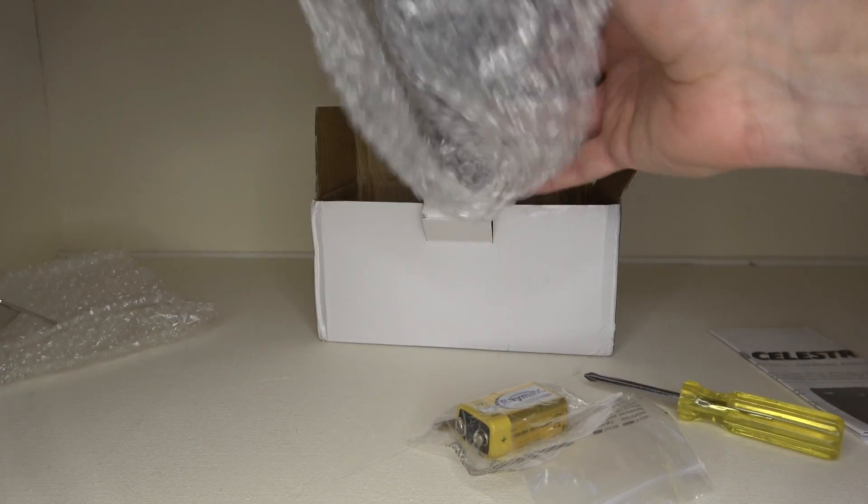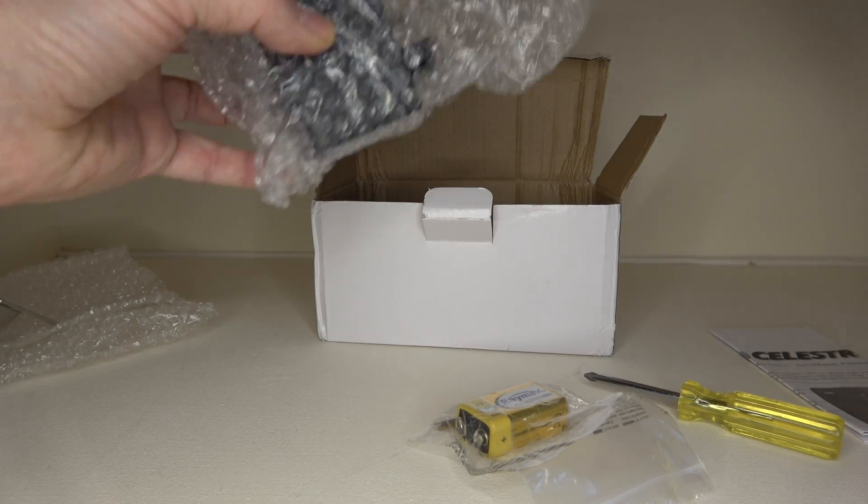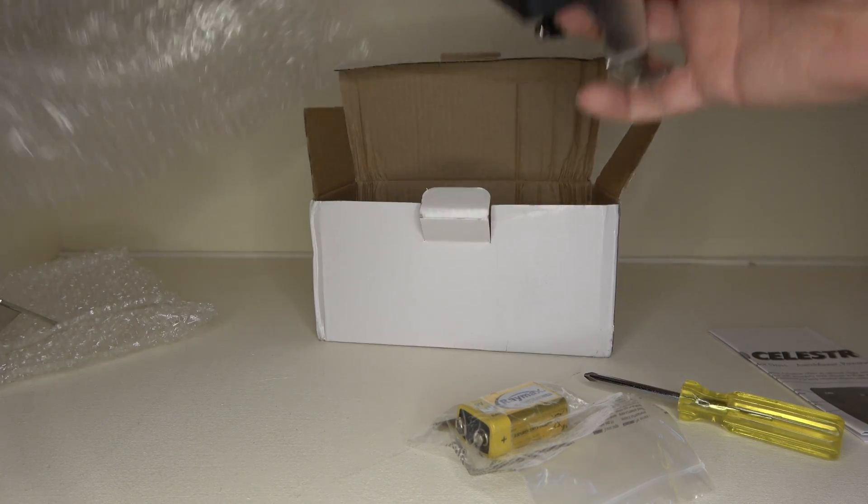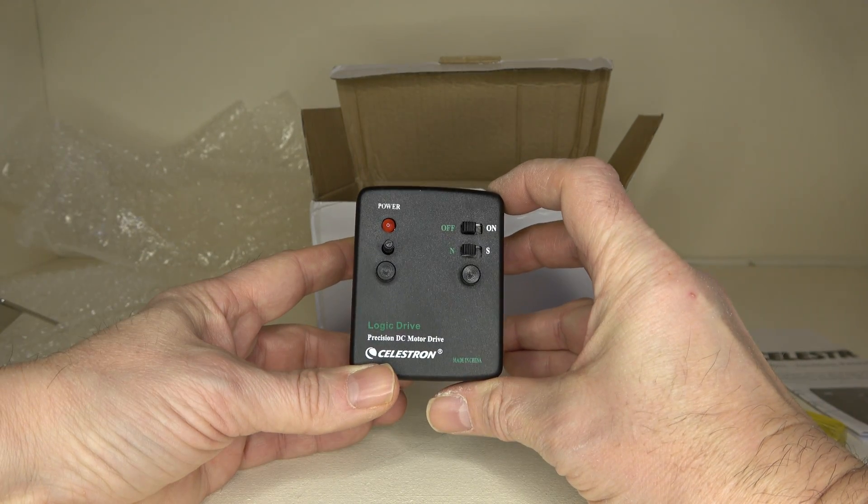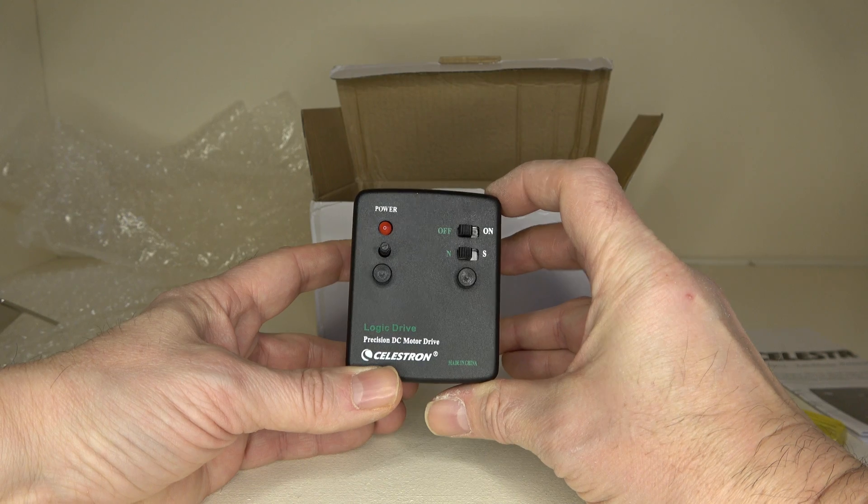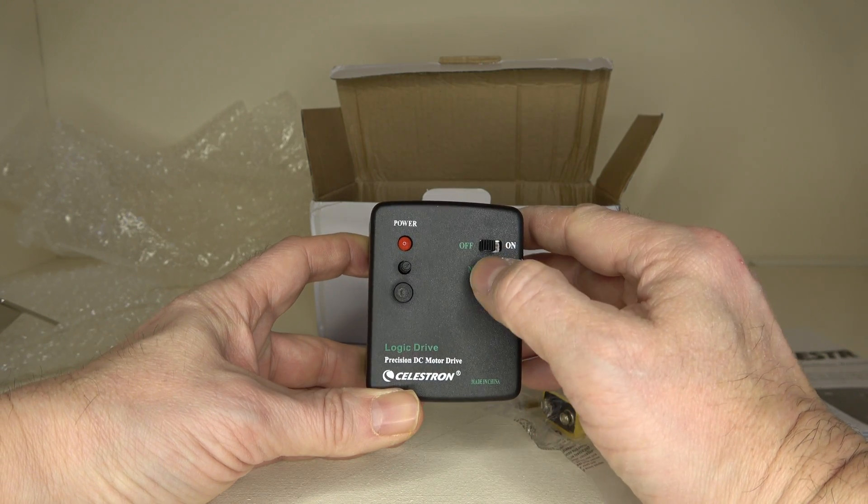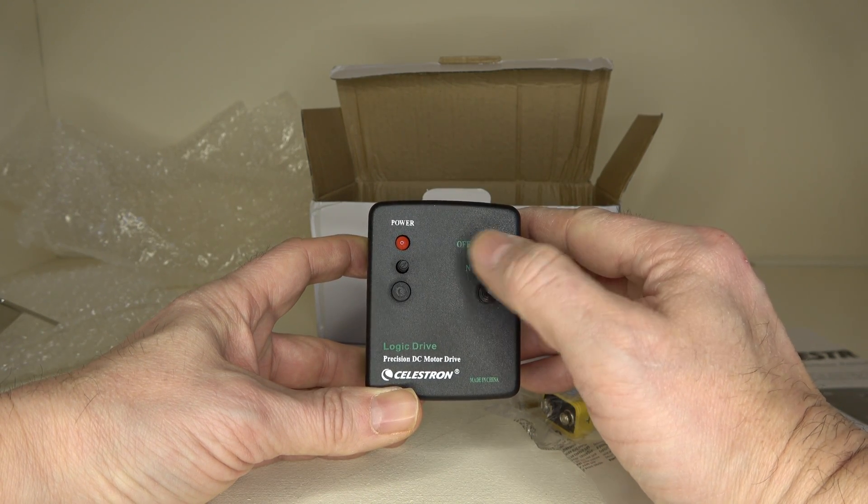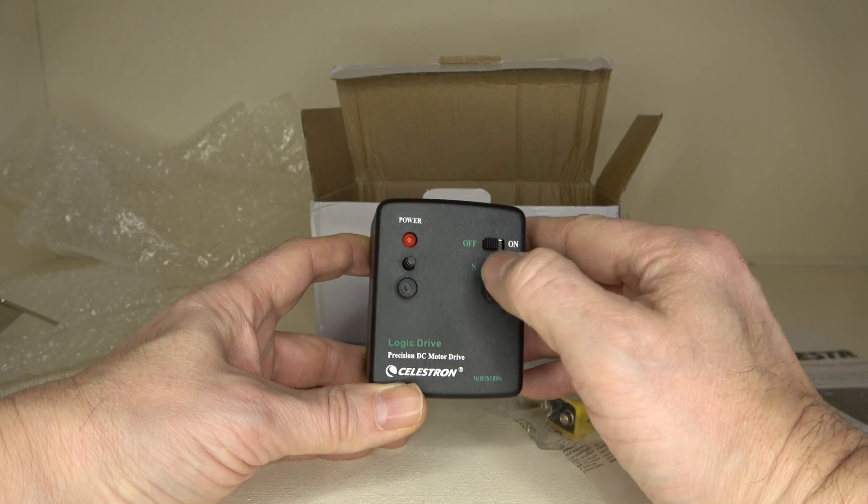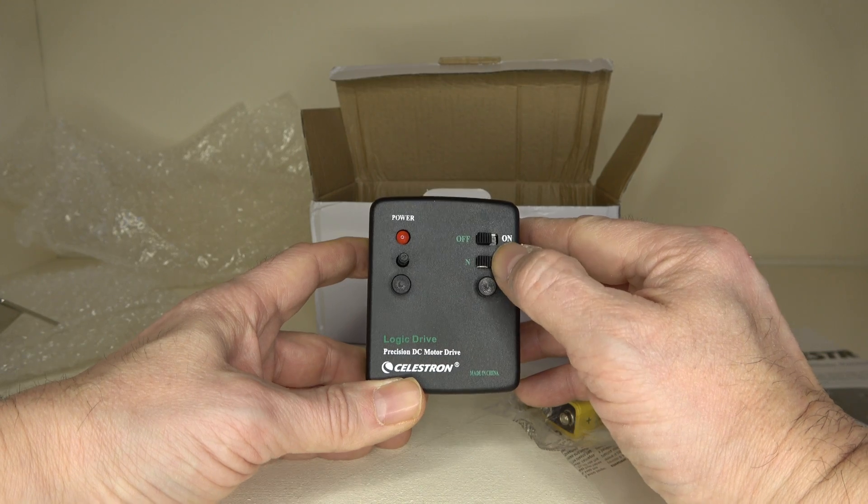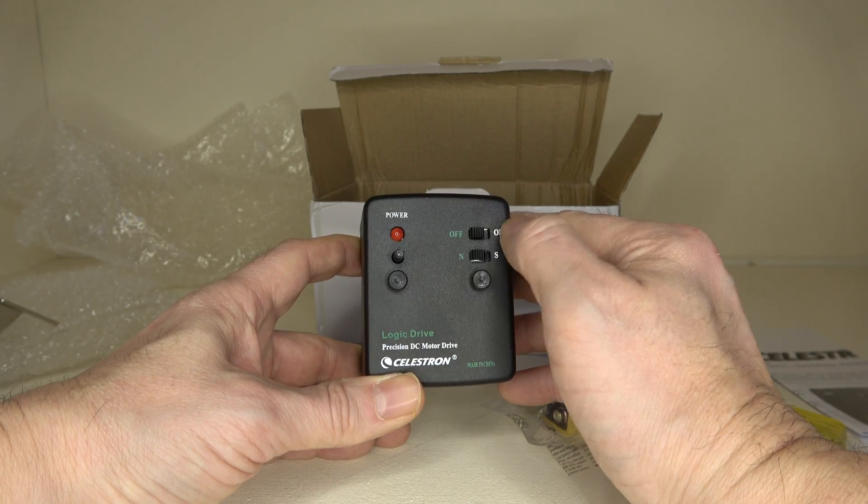And here is the machine, the logic drive precision DC motor drive. You've got north and south there, depending on where you are, whether you're on the north or south hemisphere. So if you're in Australia you set it that way, and if you're in England for example you set it that way. There's your on-off switch.